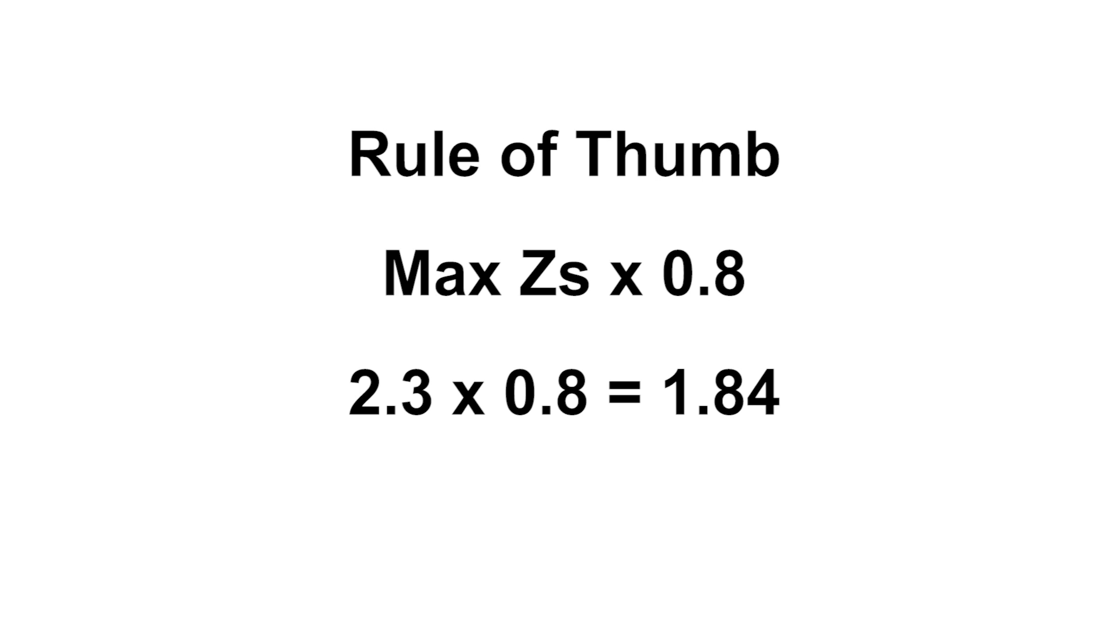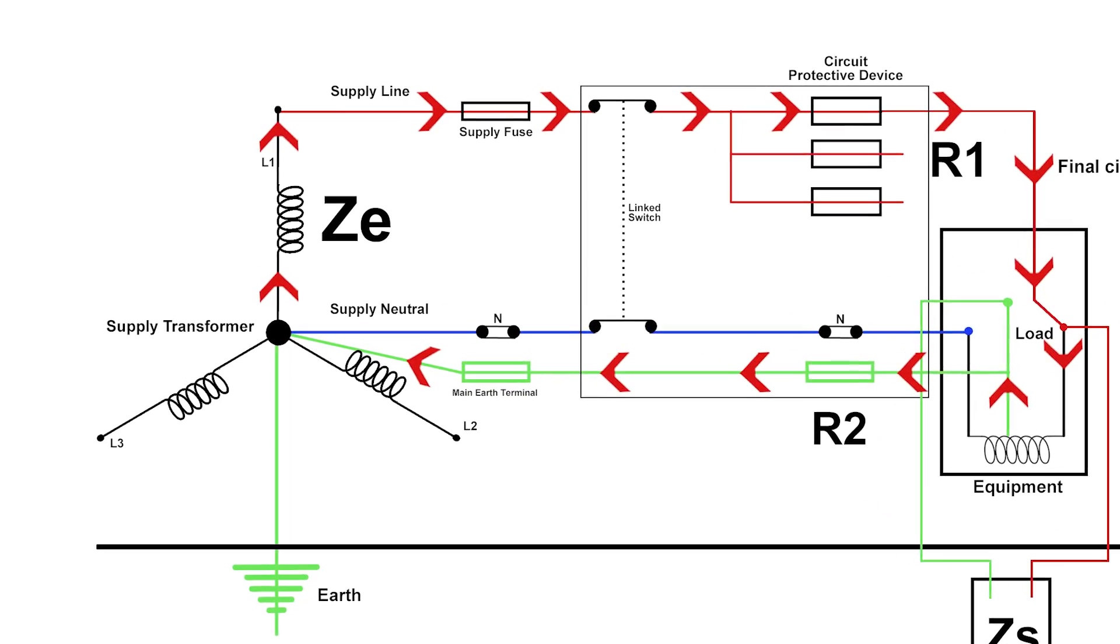We know that the maximum we can operate at—or maximum temperatures our cable can run at—are 70 degrees, but we've no idea the temperature of those cables when we're measuring them. For our purposes, if we multiply the maximum value from BS7671, which for a 20 amp type B device is 2.3 ohms, by 0.8, we end up with a value of 1.84. Our measured value must not be greater than that rule of thumb value.